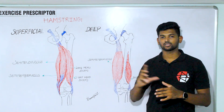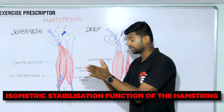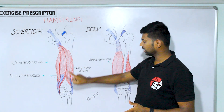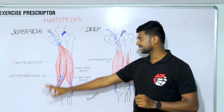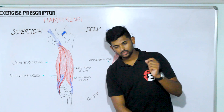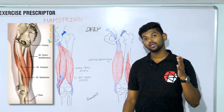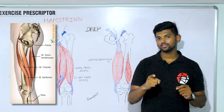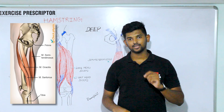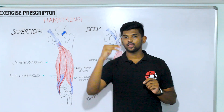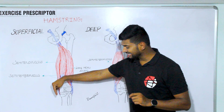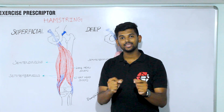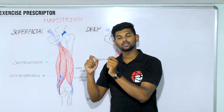The isometric stabilization function of the hamstring helps to stabilize the pelvis at the hip joint and also the knee joint. Most importantly, semitendinosus attaches to the anteromedial aspect of the knee joint along with sartorius and gracilis. These three muscles pass the knee joint medially and stabilize the medial knee joint against valgus stress.